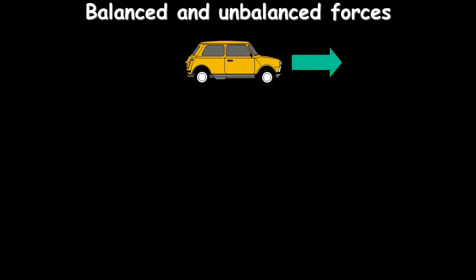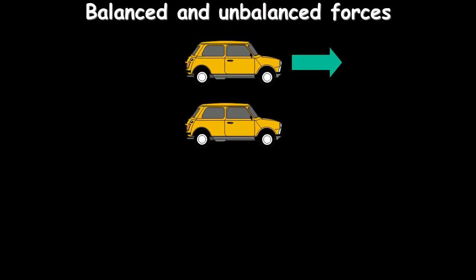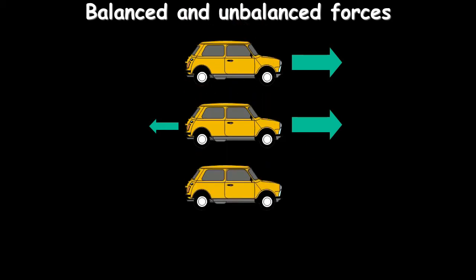Consider a car: if it starts moving forward driven by the engine, it will accelerate. At very low speed there is no frictional force, but as speed builds up a force acts in the opposite direction due to air resistance and friction, trying to slow it down. At this stage it's still accelerating because the forward arrow is bigger than the backward arrow.